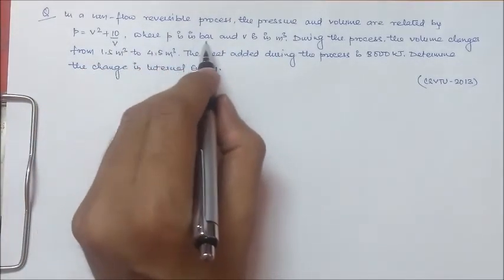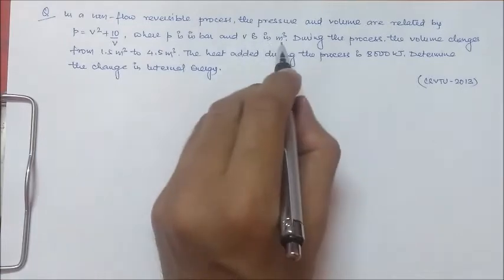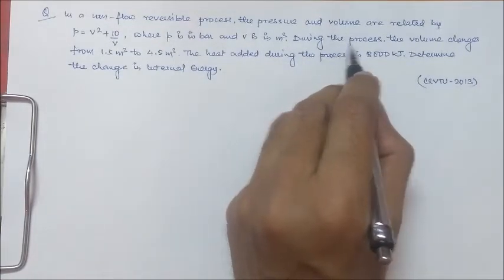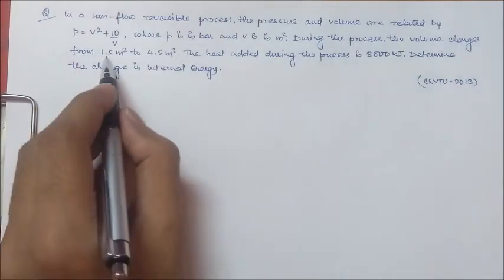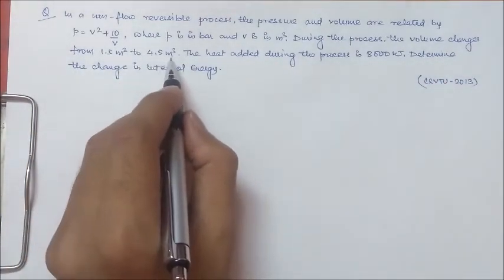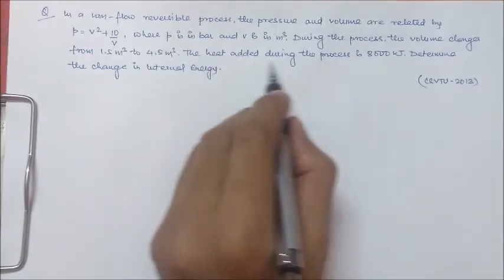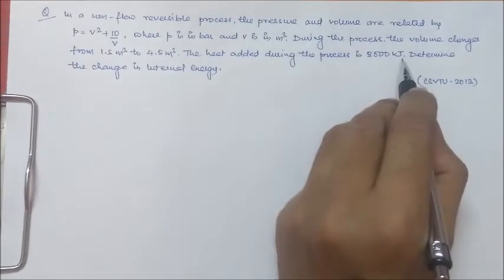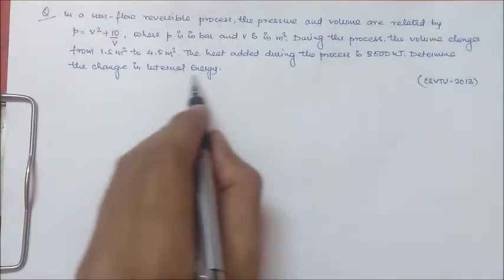where P is in bar and V is in meter cubed. During the process, the volume changes from 1.5 meter cubed to 4.5 meter cubed. The heat added during the process is 8000 kJ. Determine the change in internal energy.